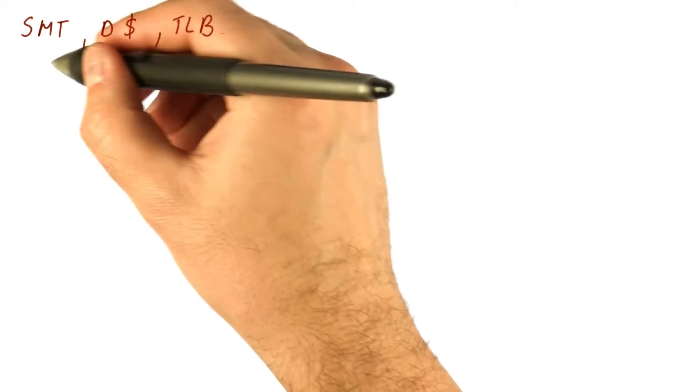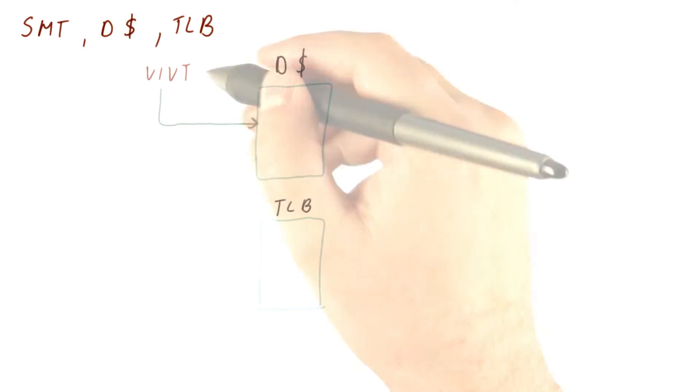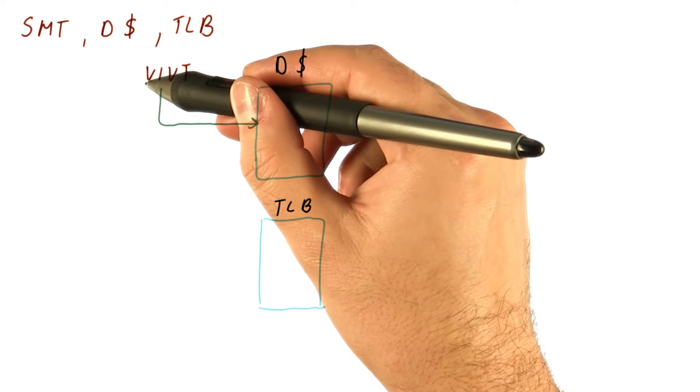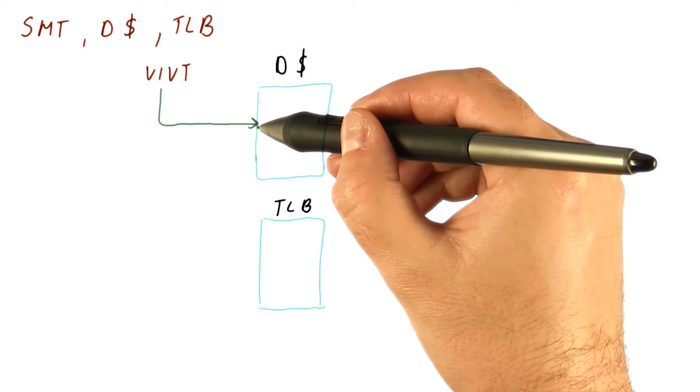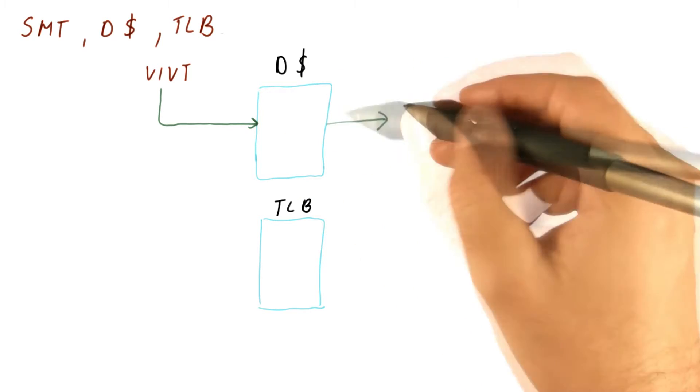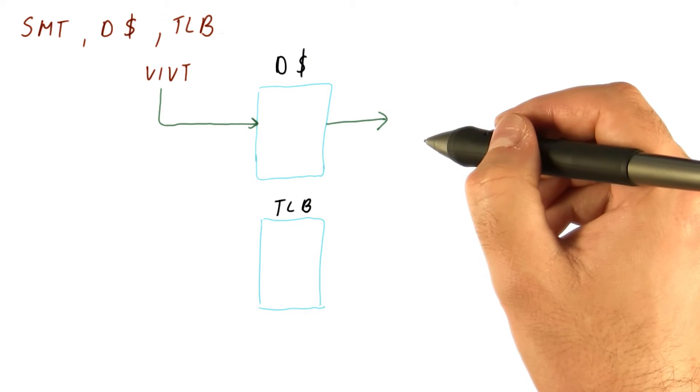Now let's look at the relationship between SMT, data cache, and TLB. If we have a virtual indexed, virtually tagged cache, then we simply send a virtual address into the cache and use the data that comes out of the cache.